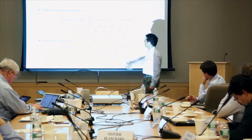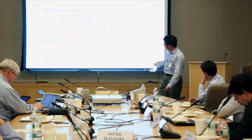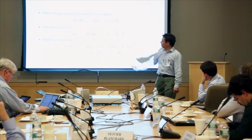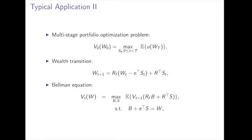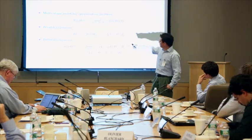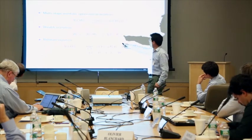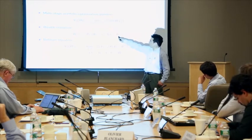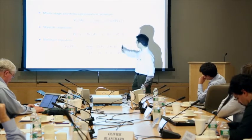The first test problem is the very typical optimal growth problem. The second is a portfolio optimization problem. In this simple version, I assume there are no transaction costs. We want to maximize the expected utility of terminal wealth. The wealth transition depends on S, the stock allocation, and R, the return of the stocks. The wealth minus the summation of stock allocations is saved in the bank, earning a risk-free return RF. Here is the Bellman equation.